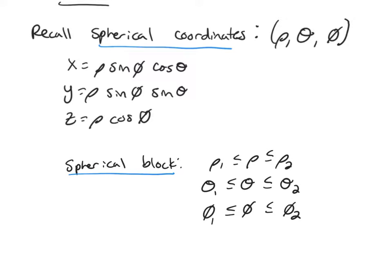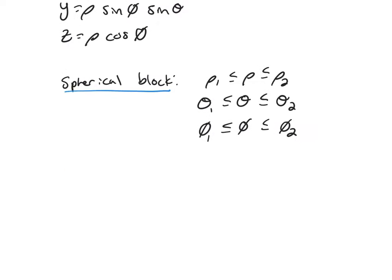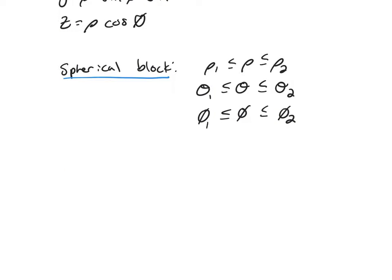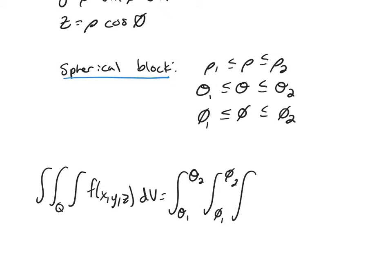And then we can set up our triple integrals using spherical coordinates. So a triple integral over region Q of a function dV becomes the integral from θ₁ to θ₂, the integral from φ₁ to φ₂, the integral from ρ₁ to ρ₂.